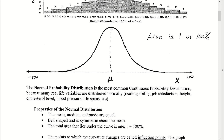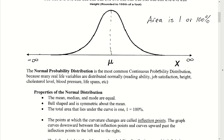Wherever the highest point on the bell occurs, that value on the x-axis is going to be the mean. This graph will continue infinitely far to the left and infinitely far to the right. It will approach the horizontal axis asymptotically, but it will never cross it and it will never touch it.